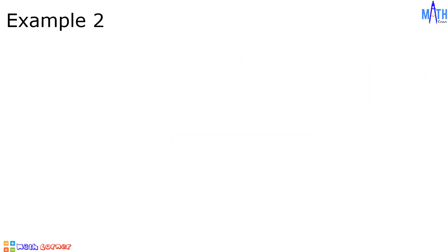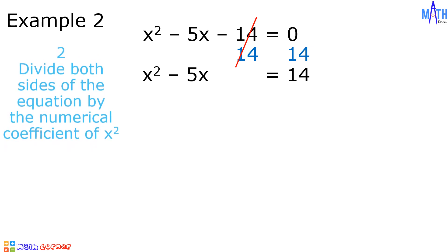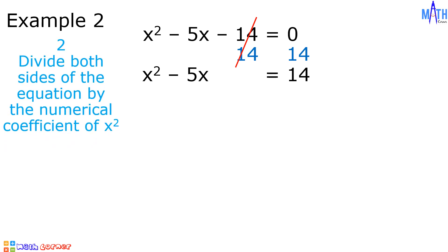Example number 2: let us solve x squared minus 5x minus 14 is equal to 0 by completing the square. Step number 1: express the equation with a constant term on the right side. The constant term is negative 14. Let us add positive 14 to both sides of the equation. Negative 14 plus 14 is equal to 0. Since the numerical coefficient of x squared is equal to 1, there is no need to divide. So let us proceed to step number 3.